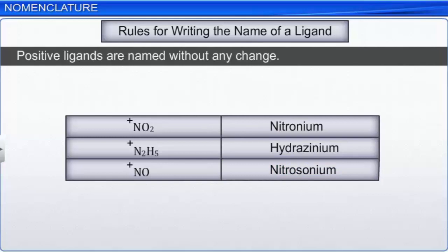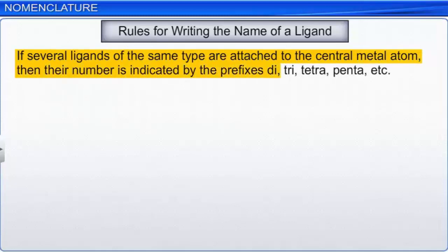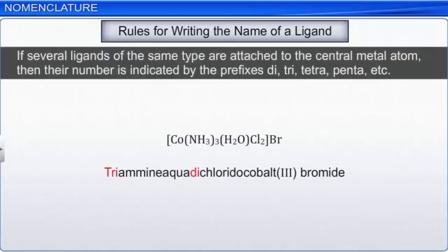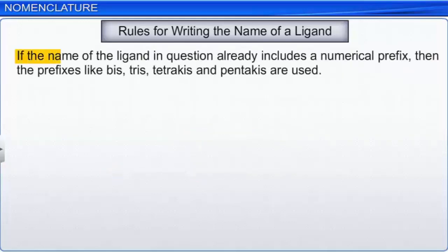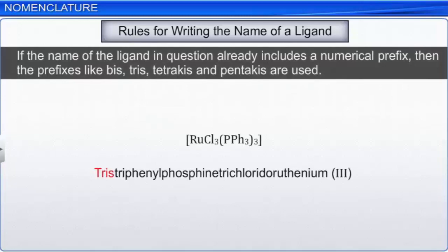Another rule states that if several ligands of the same type are attached to the central metal atom, their number is indicated by the prefixes di, tri, tetra, penta, etc. For example, in [Co(NH3)3(H2O)2Cl2], the three amine and two aqua ligands are indicated by the prefixes tri and di respectively. However, if the name of the ligand already includes a numerical prefix, then the prefixes bis, tris, tetrakis, and pentakis are used. For example, [RuCl3(PPh3)3] is named as tris(triphenylphosphine)trichloridoruthenium(3).